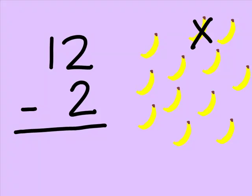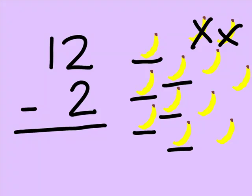We take away 2 bananas from this group. If we take away 2 bananas from this group, we are left with 1, 2, 3, 4, 5, 6, 7, 8, 9, 10 bananas.